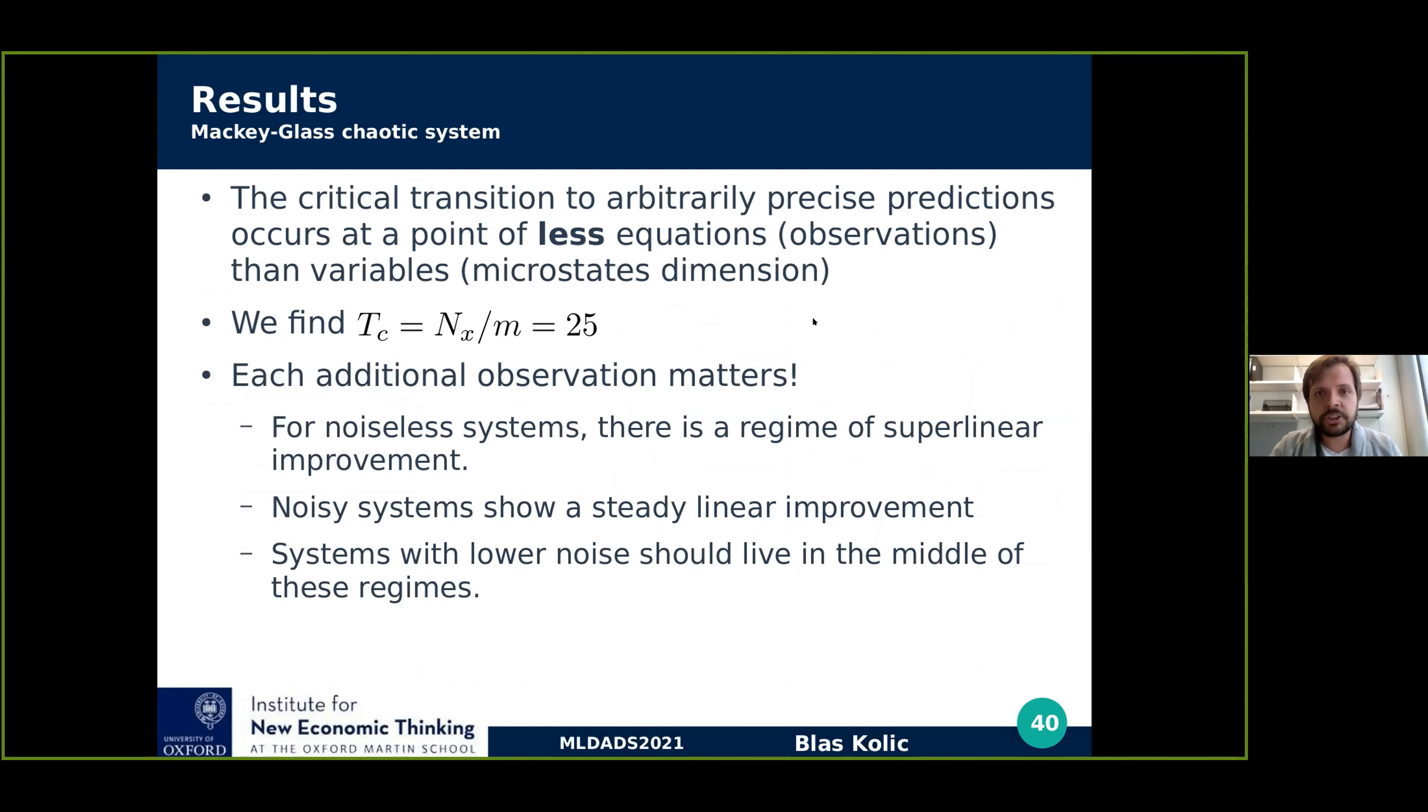Just to wrap up all of this, there's a critical transition to arbitrary precise predictions at a point of less equations and variables, equations being the number of observations and variables the microstate dimension, which we find is 25, which is the state dimension over the sampling interval. Each additional observation matters. There's a regime in the noiseless case for superlinear improvement. And even in the noisy case, every extra observation helps.